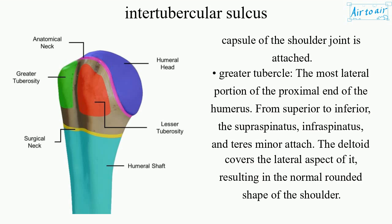Greater tubercle: the most lateral portion of the proximal end of the humerus. From superior to inferior, the supraspinatus, infraspinatus, and teres minor attach. The deltoid covers the lateral aspect of it, resulting in the normal rounded shape of the shoulder.